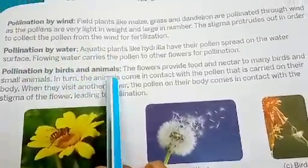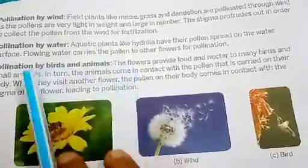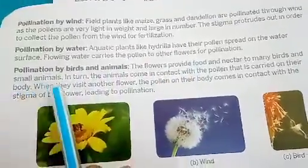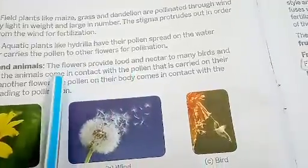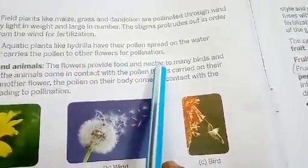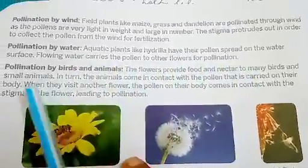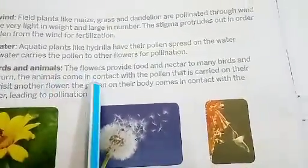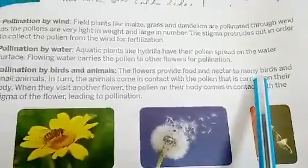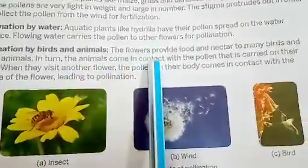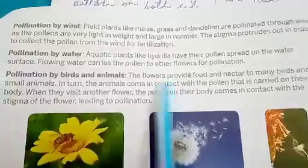Pollination by birds and animals: when birds visit flowers for nectar, while sucking the nectar they help in the transfer of pollen grains. These pollen grains are then taken to another flower and dropped there so that pollination can take place.